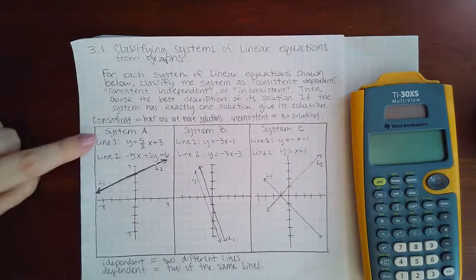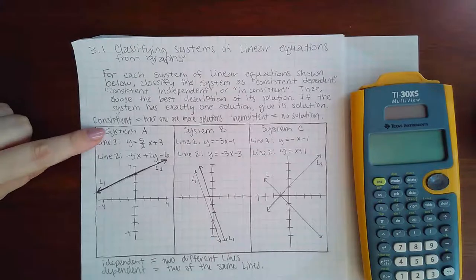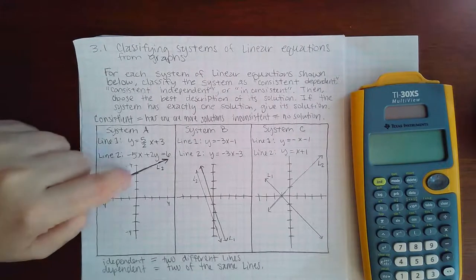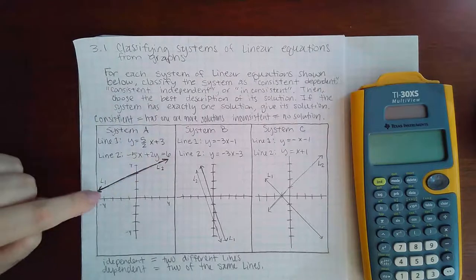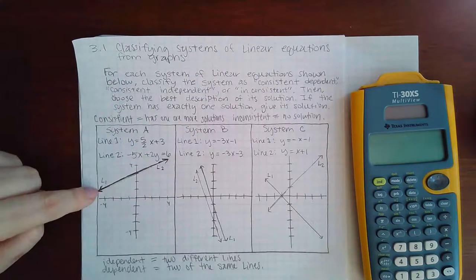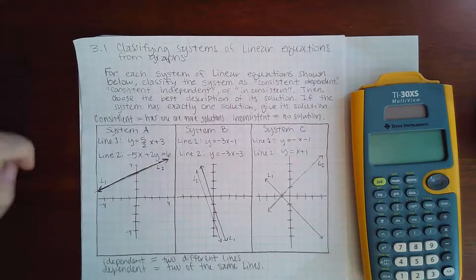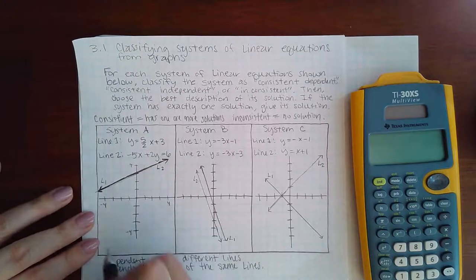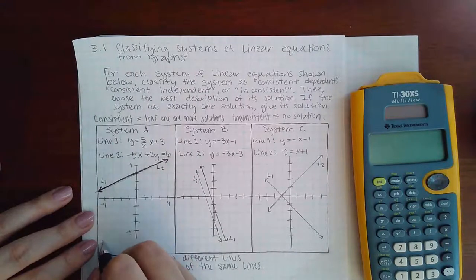So if we look at System A, I do have a solution. It just happens to be infinitely many solutions because line one and line two are the exact same graph, and so therefore they intersect all over the place along that line. So what am I going to say? I'm going to say that this is consistent.